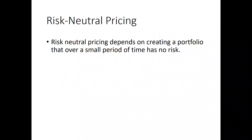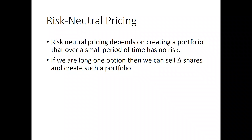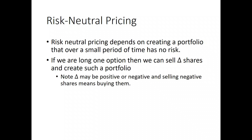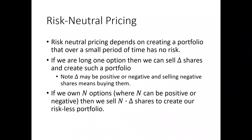A portfolio consisting of long this option and short half a share will at least temporarily have no risk. Effectively, we become indifferent to whether the stock goes up or down. Risk-neutral pricing depends on creating a portfolio that over a small period of time has no risk. For a long one option, we can sell delta shares and create such a portfolio. Note that delta could be positive or negative on any option, and selling negative shares means buying them. Finally, if we own N options, where N could be positive or negative — owning negative five options means we've sold five options — then if we sell N times delta shares, we create our riskless portfolio.